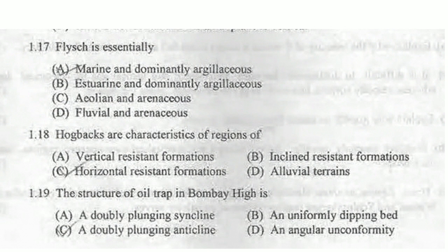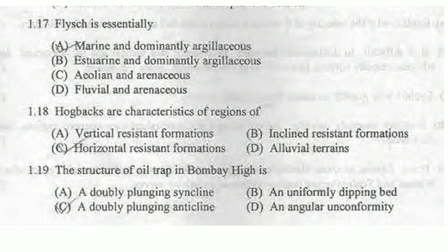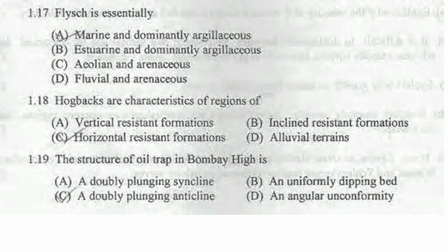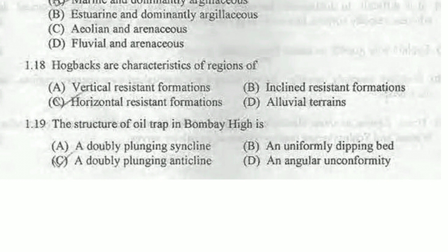Next question: what is flysch? Flysch is a sedimentary environment in which sedimentary layers get deposited by deformation, especially marked by shales. In the Himalayas, we have the Chakratha Formation — the shales of the Chakratha Formation are considered a flysch, as described by Valdiya. In flysch formation, subsidence occurs due to overloading or sea-level changes. So option A — shale and marine — is the correct answer. Hogbacks are characteristic of vertical resistant formations.